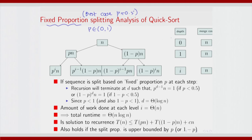Now, what is the work done at every depth? Well, you have to scan all the elements at every depth — scan and merge elements. The merge cost or even the split cost put together at the first level will be n. At the second level again you need to scan all these elements while merging, and that will sum to pn plus (1-p)n, which again gives you n. So the sum at each depth actually gives you n.